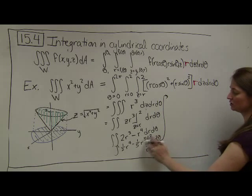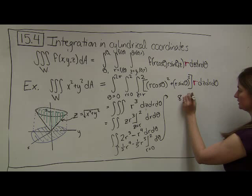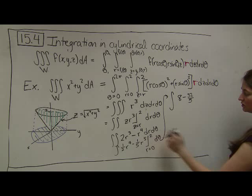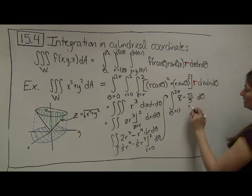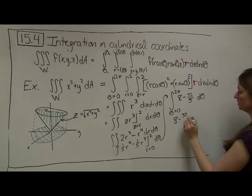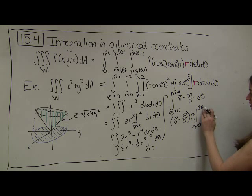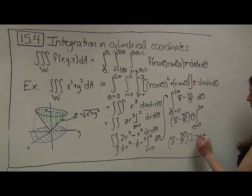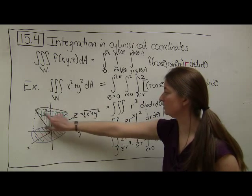Finishing up: when I plug in r = 2, I get 16 halves, which is 8, minus 32/5. When r = 0, I get 0. So the integral over r is all gone, and this is just one big constant being integrated with respect to theta from 0 to 2π. Integrating gives (8 − 32/5)·θ evaluated from 0 to 2π, which is 2π times (8 − 32/5). I'll leave this as my final answer. The hard part was setting up the bounds — what was the base of this figure, and how did the heights vary?